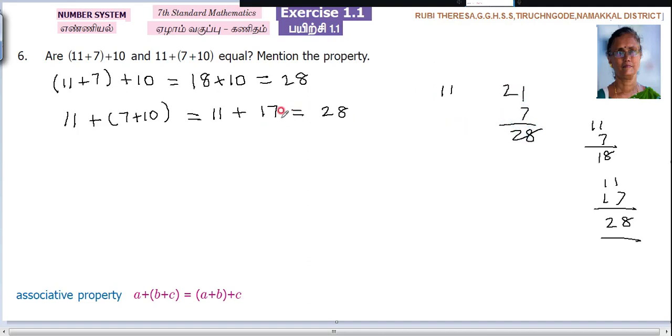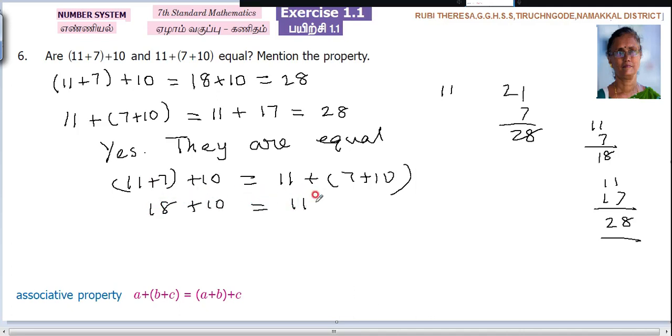So there are different types I taught you. Whichever method you can do it speedily, that method you can take it. So 28, 28. Are they equal? Yes, they are equal. That means what? 11 plus 7 plus 10 equal to 11 plus 7 plus 10.